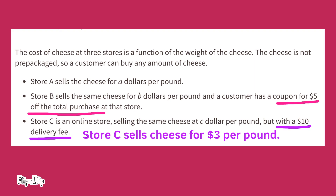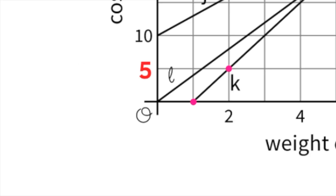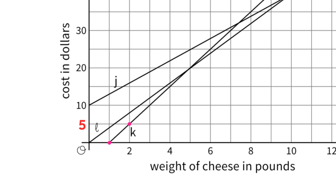Now let's look at line K. One pound of cheese costs zero dollars and two pounds costs five dollars. That makes me think that if you used a coupon for five dollars off one pound, you could get that pound for zero dollars. Line K must represent Store B — the store with the five dollar coupon. One pound would be free, two pounds would be five dollars, three pounds ten dollars, and four pounds fifteen dollars.